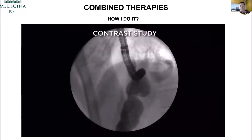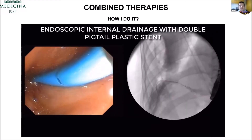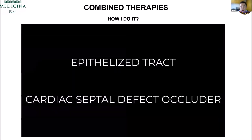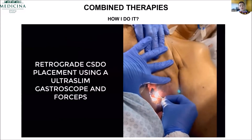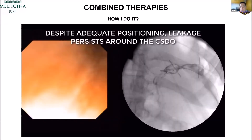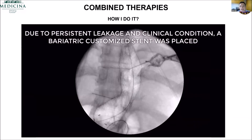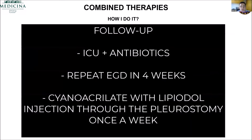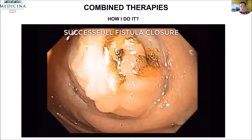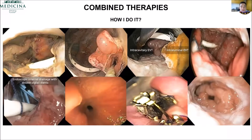This case shows our combined therapies approach, because most of the time you're going to need more than one therapy. Here we have a leak on the sleeve — we dilated this patient who has a chronic gastric-pleural fistula. After pigtail placement the patient didn't do well, so we removed the pigtail to the pleurostomy and used the septal occluder. After placing the septal occluder we expected everything perfect, but we had a leak with contrast. Then we injected glue and placed a stent to help the over-the-scope clip. Every week for four weeks we injected cyanoacrylate through the pleurostomy into the cardiac septal defect occluder. After four weeks, there was complete closure. These patients did very, very well — it just shows that sometimes we need combined therapies.